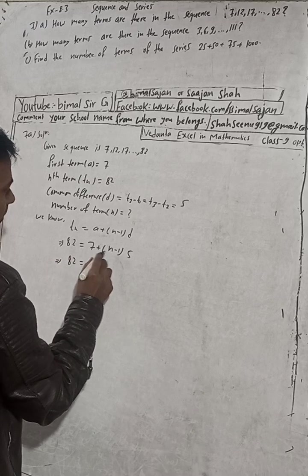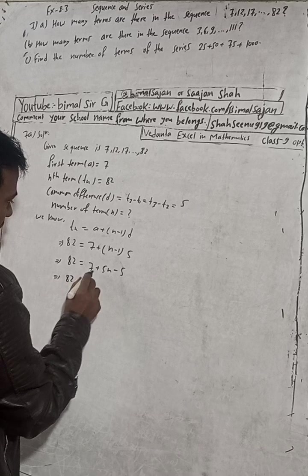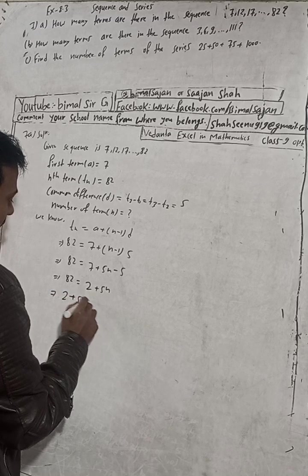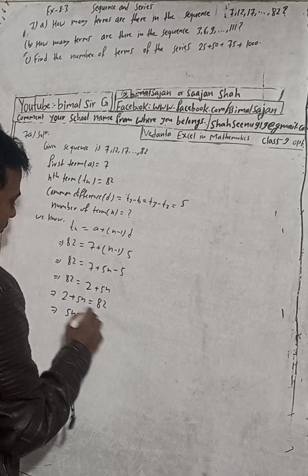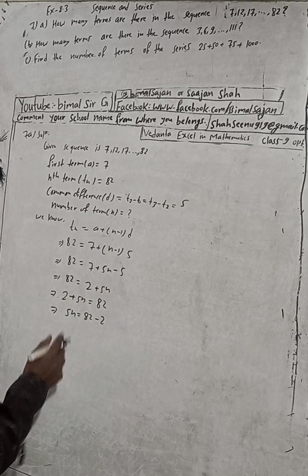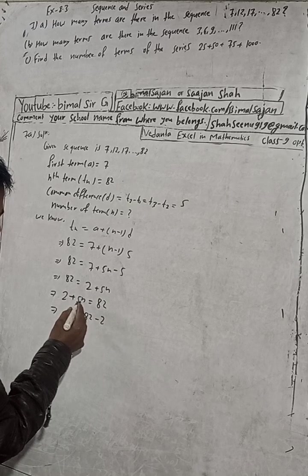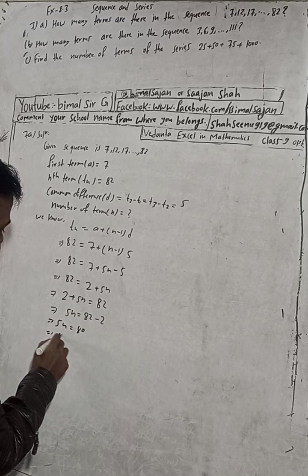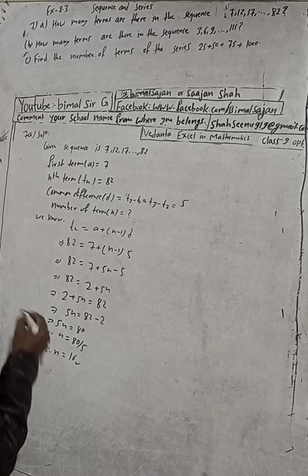So 82 is equal to 7 plus n minus 1 into 5. This implies 82 is equal to 7 plus 5n minus 5, which equals 2 plus 5n. Now we change the sides, 5n is equal to 82 minus 2. When it goes to the other side, changing the sides, 5n equals 80. This implies n is equal to 80 divided by 5. Therefore n is equal to 16.